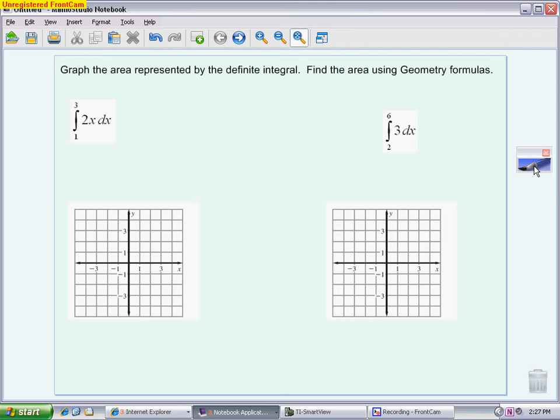So the first one is the definite integral from 1 to 3 of 2x. So we want to draw the equation 2x. 2x is a line that goes through 0, 0 and it has a slope of 2, going up 2 right 1. And I'm really just going to draw it from the origin. Because you'll notice that I'm starting at 1 and I'm going to 3. So here is the region that I'm going to find the area of geometrically. This is the representation of the definite integral.